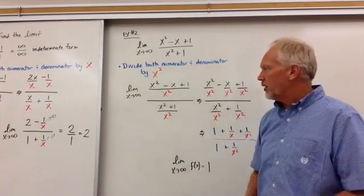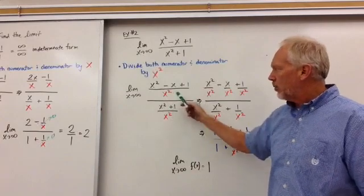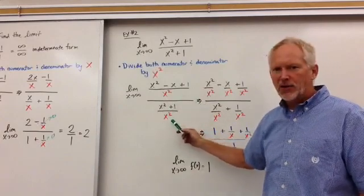So we get x squared minus x plus 1 over x squared. And we get x squared plus 1 divided by x squared.